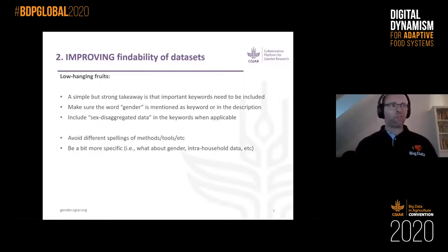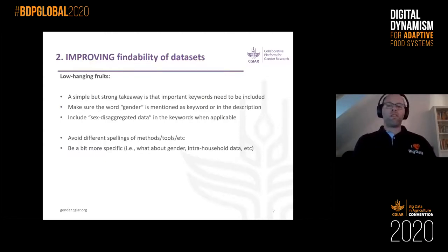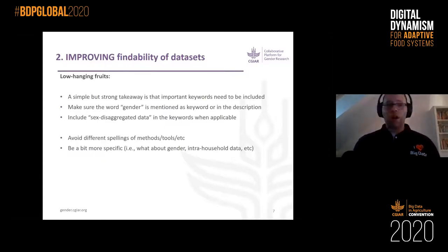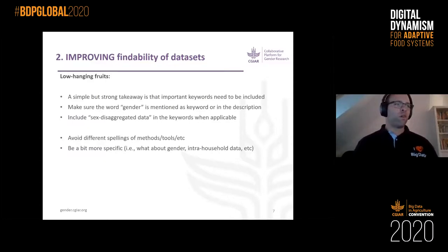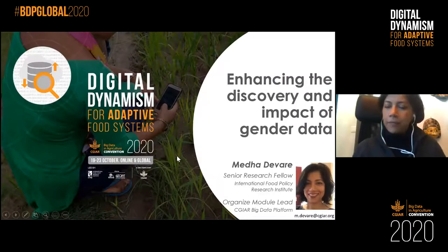You could think of two starting points: a gender researcher trying to find other gender datasets from projects with a strong gender focus, or a gender researcher looking for datasets not initially designed for gender research but containing, for example, sex-disaggregated or intra-household disaggregated data. The really low-hanging fruit: use the right keywords. Agree with your colleagues on important keywords. Make sure the word 'gender' is included. Avoid different spellings, and try to be more specific — about socioeconomic barriers, access to mobile phones — to make reusability of your data much stronger.